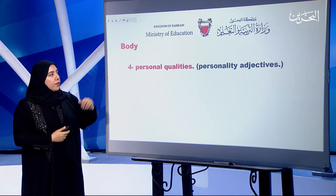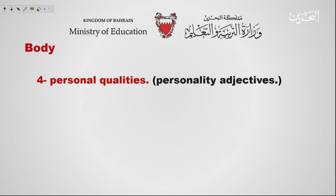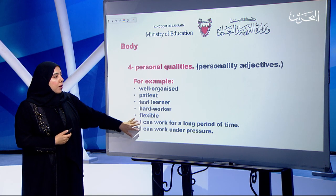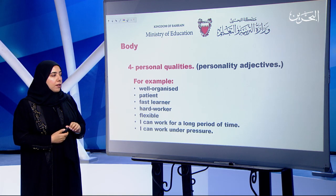Personal qualities are also part of the body. You have to refer to a set of personality adjectives — for example: well-organized, patient, fast learner, hard worker, flexible, able to work for a long period of time, or able to work under pressure. You should choose a number of adjectives to express your personality.